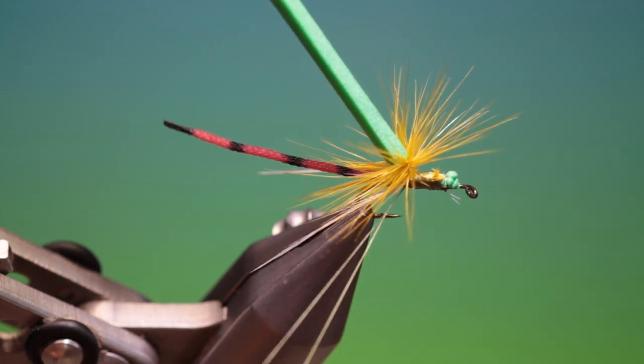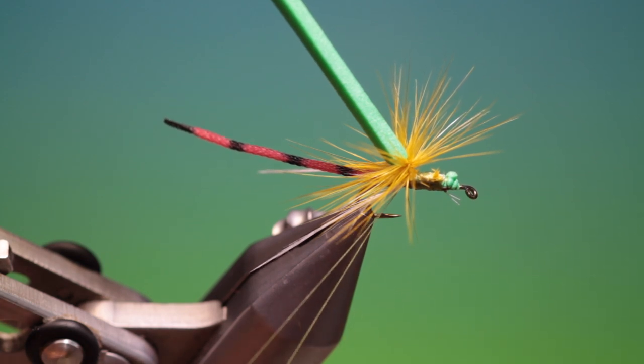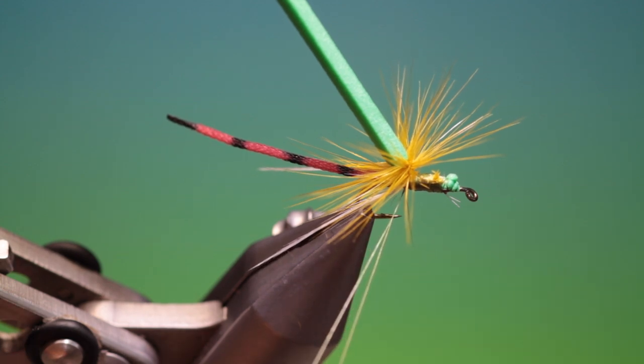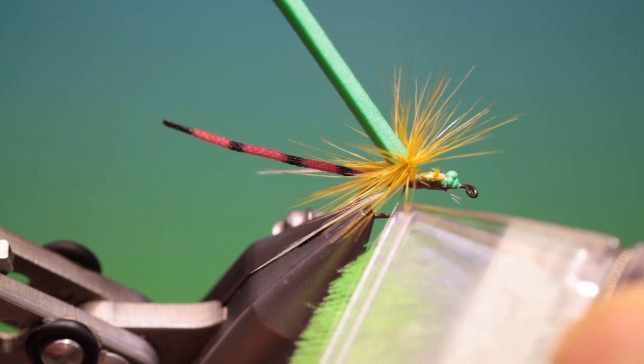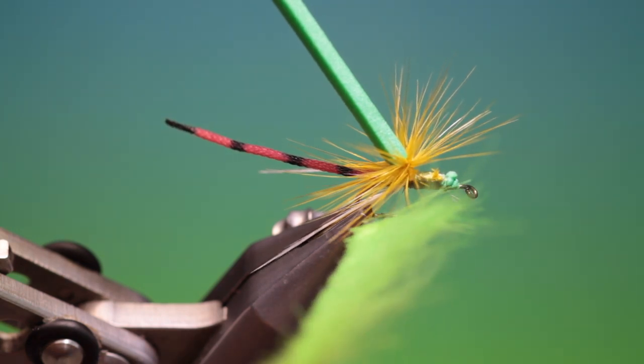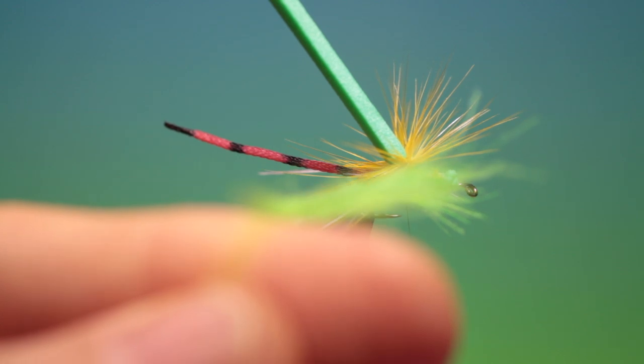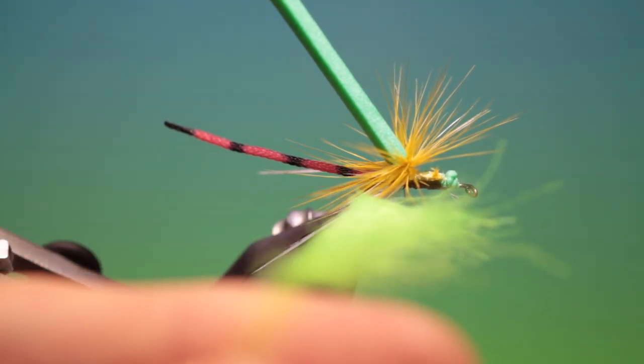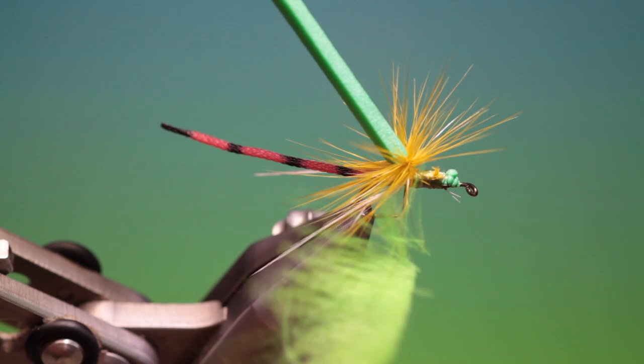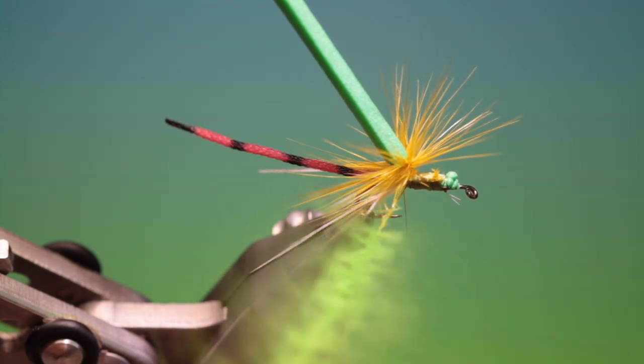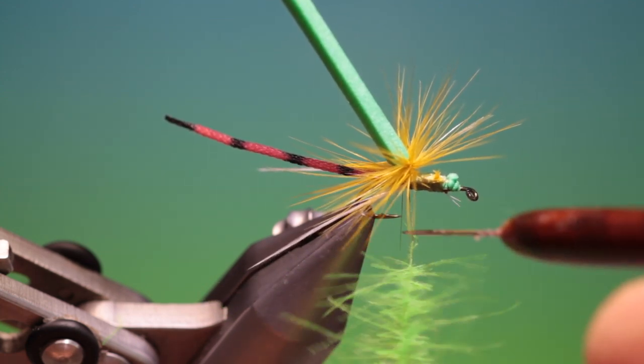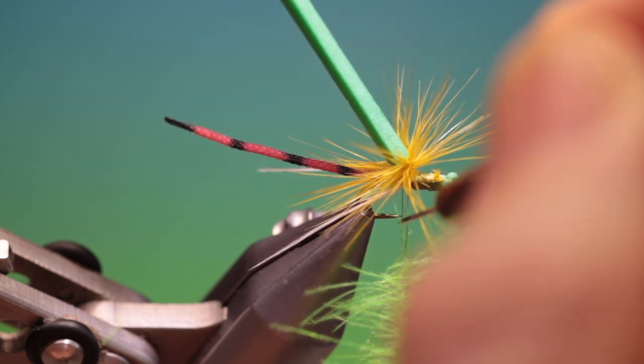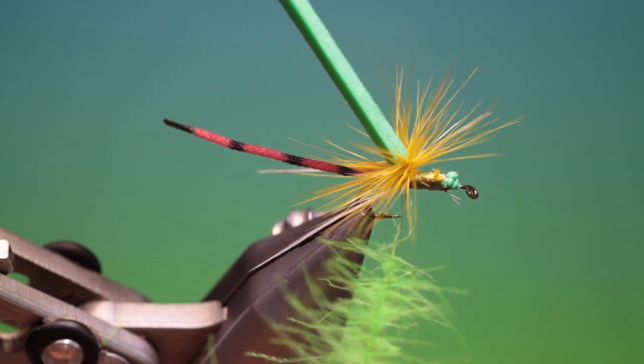And then I've loaded a Petitjean Magic Clip with green CDC. And we'll just pop that in there like that. And spin our tying thread clockwise again. Done it again. There we go. That'll do us.